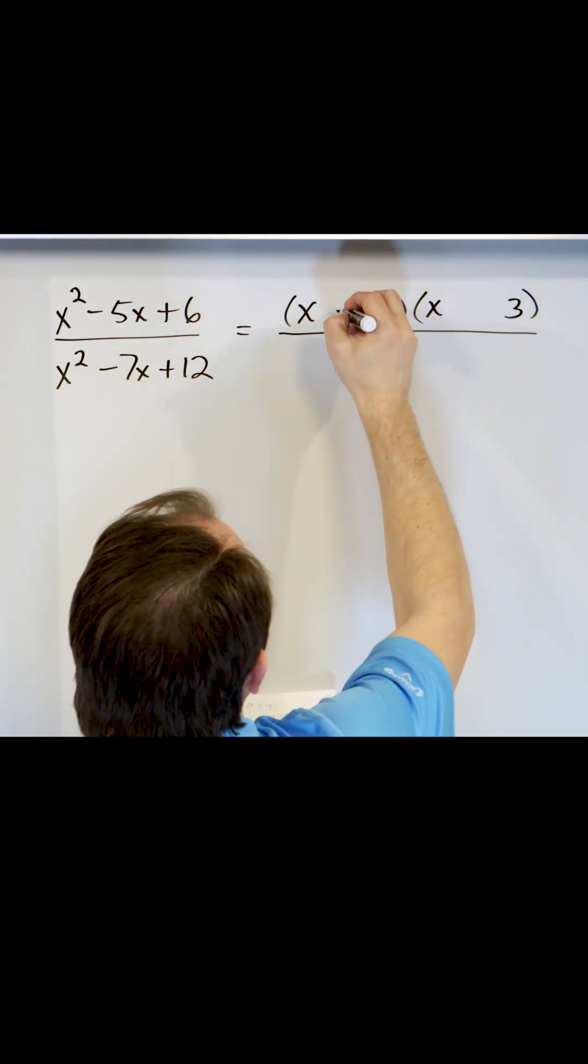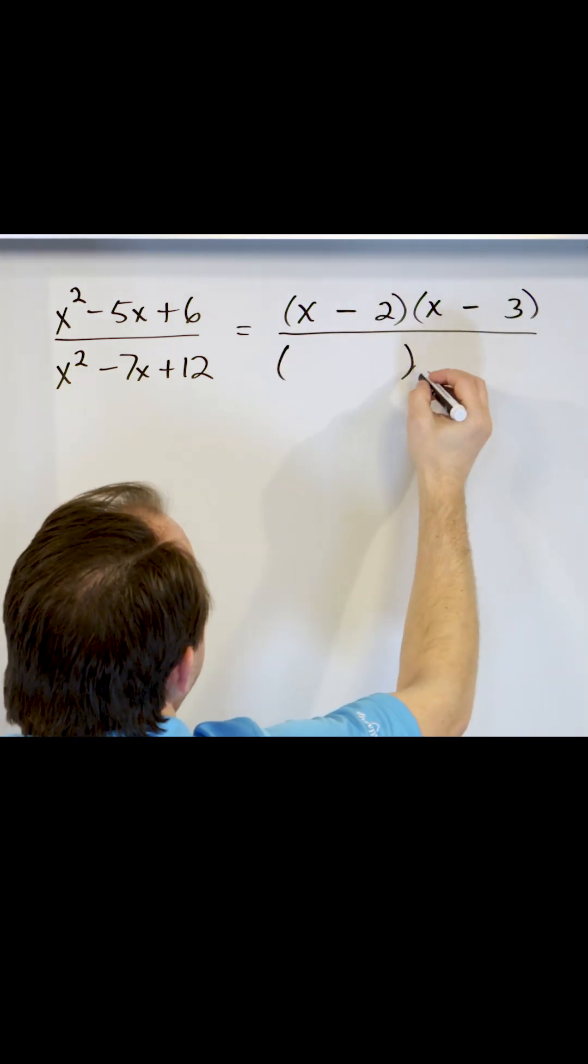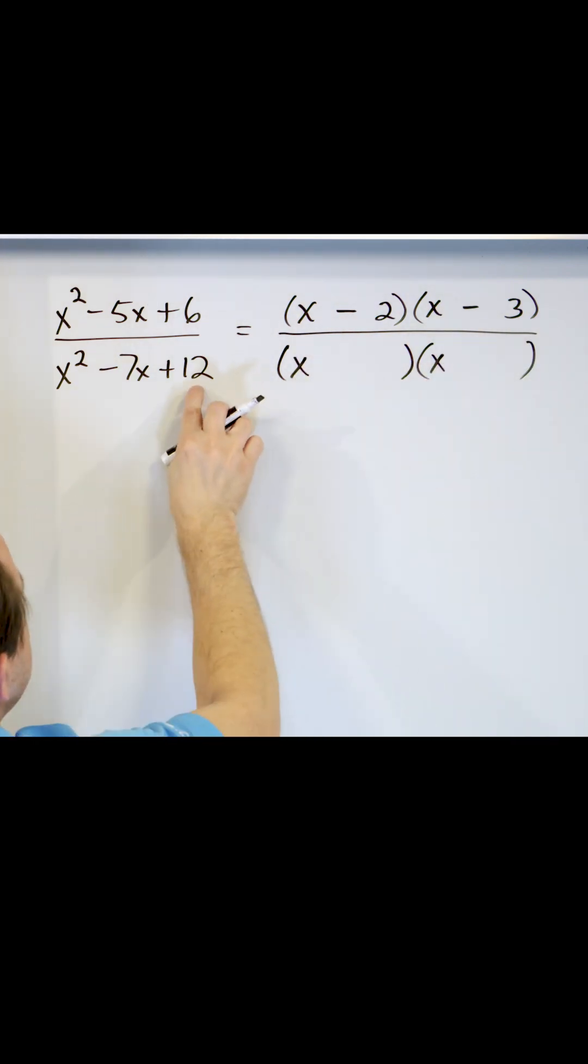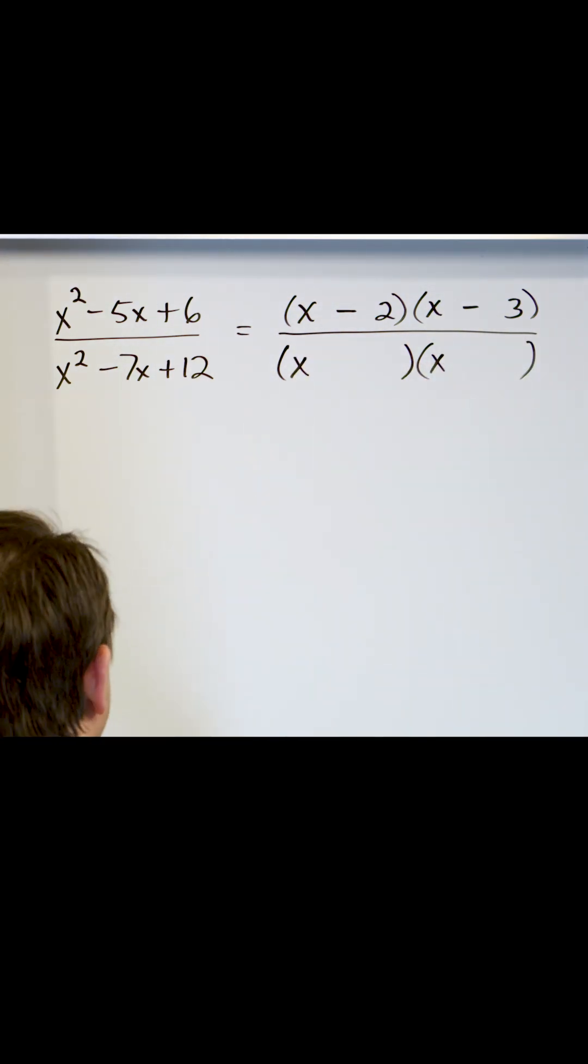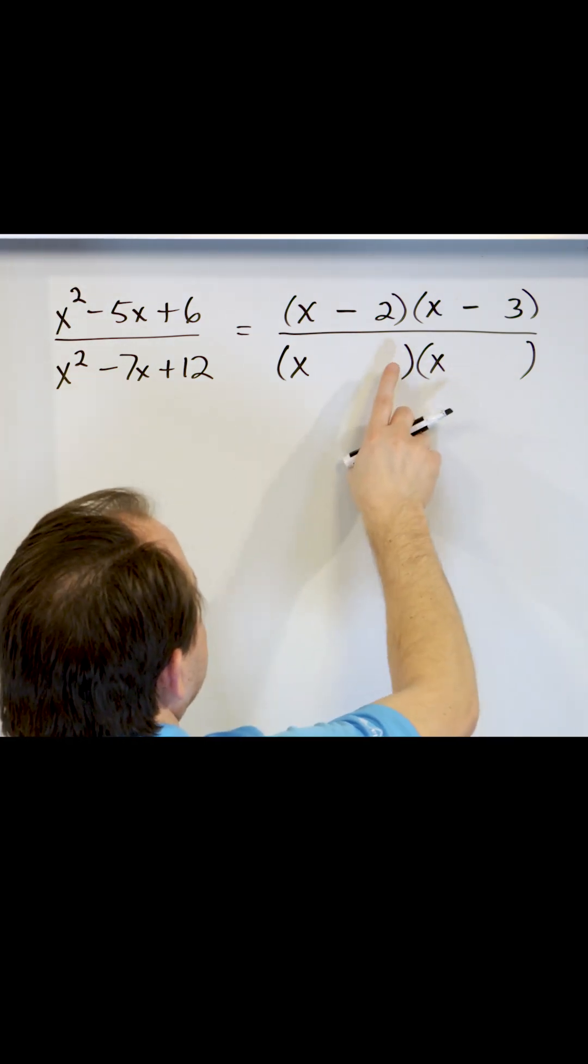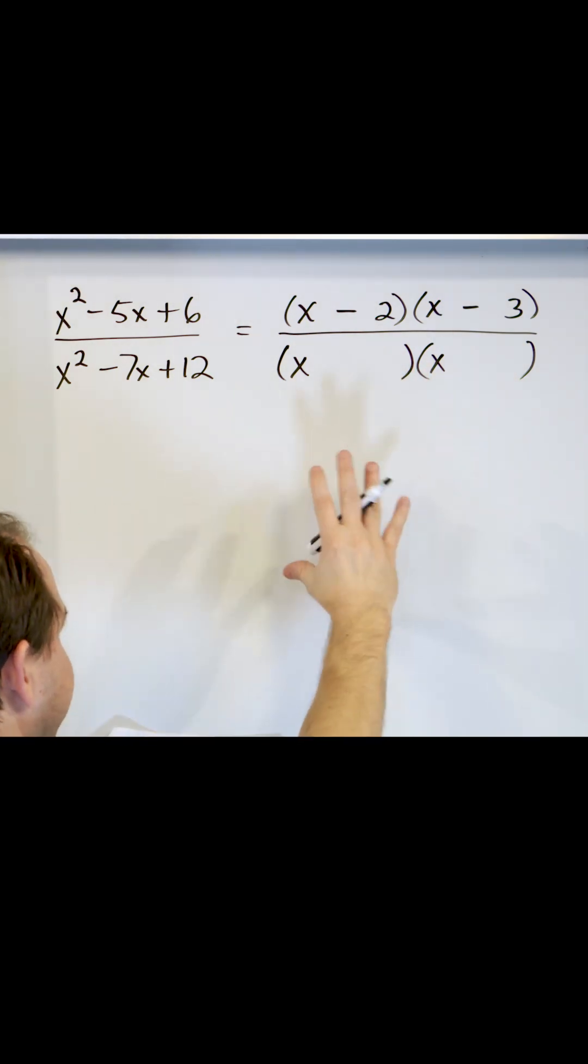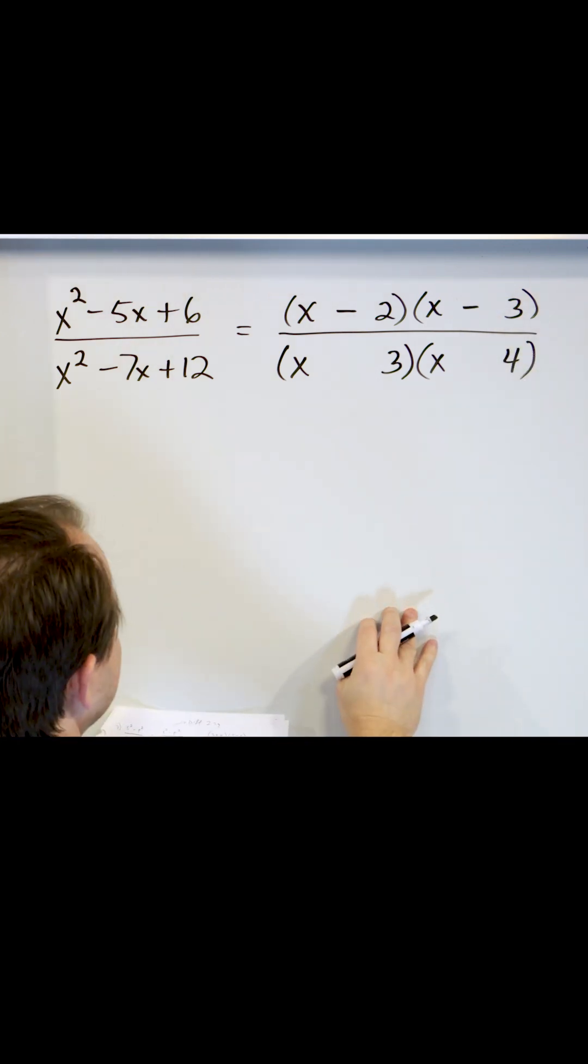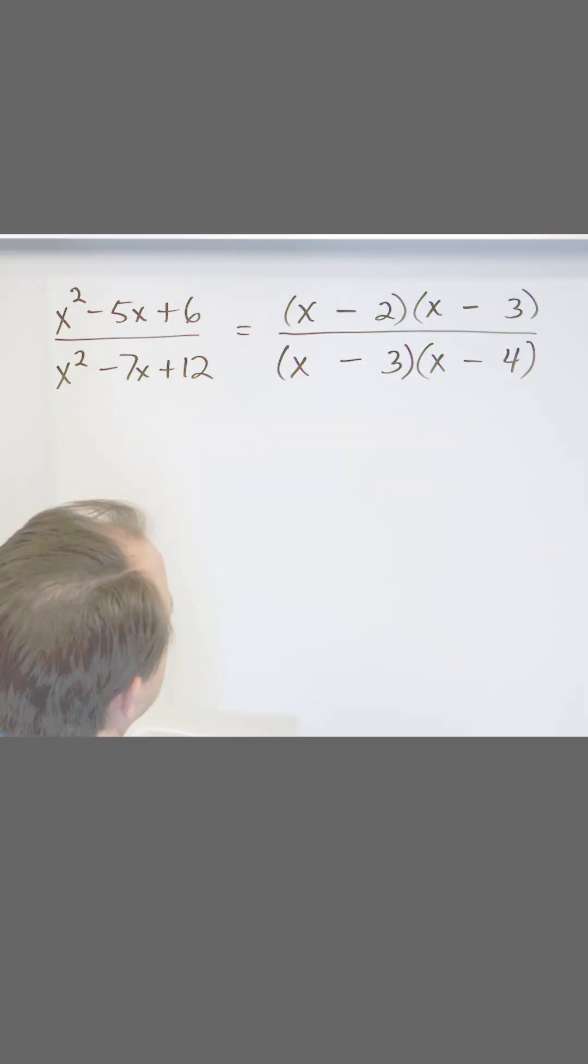In the denominator, again, you factor. You have an x squared, so the leading terms are x. Now with 12, I have lots of choices. I have one times 12 over here. I could do two times six. But when you work through all the possibilities, the only one that really works is three times four. And for the signs, what really works is negative times negative.